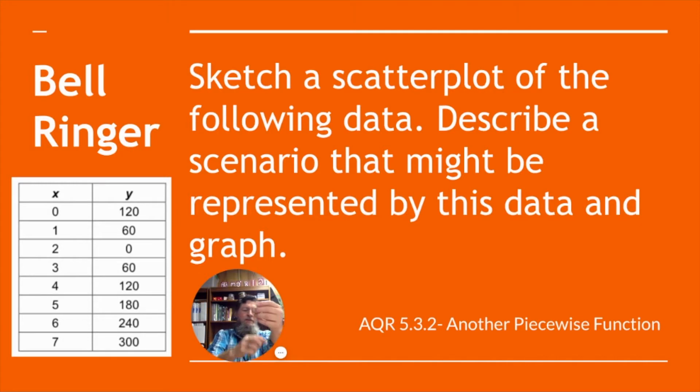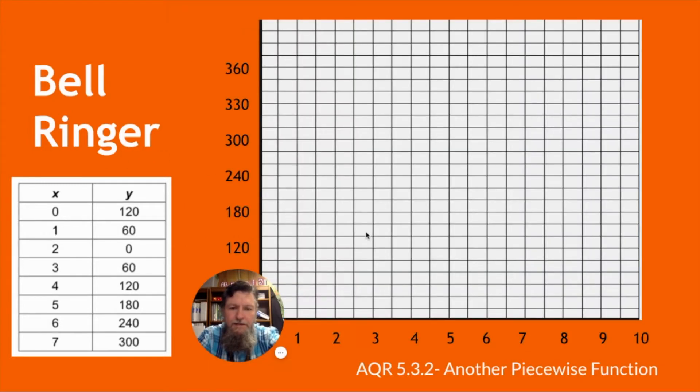So negative 60 seems to be the slope. But then at 3, it goes up 60. All of a sudden, it goes from negative 60 to positive 60. And then at 4, it goes up another 60, and then 5 another 60, and 6 another 60, and 7 another 60. So what does that look like? You can see that all of these points, it looks like it just goes down to 0 and then comes back up.